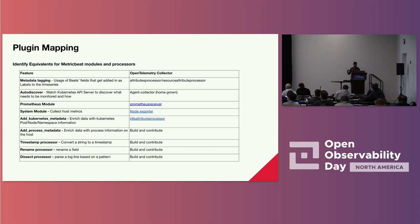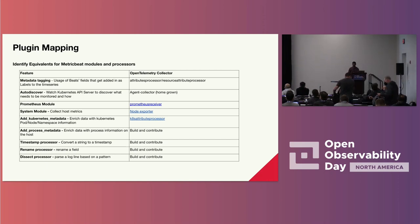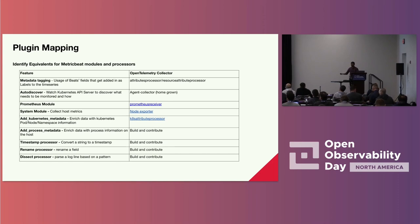We came up with all the features we needed to move to OpenTelemetry Collector. Some were already available, like metadata via the attribute processor or resource attribute processor. Autodiscover we handled with our own control loop. Prometheus scraping, system metrics, and Kubernetes metadata enrichment all had alternatives. For everything else, we decided we could either file pull requests to get features accepted into the community, or manage them as internal plugins.